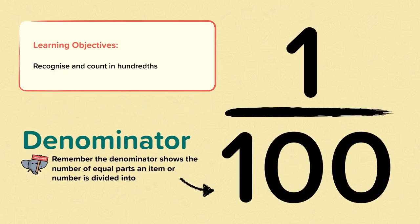Hundreds. In this nugget, the learning objective is to recognize and count in hundreds. A hundredth is a fraction, but for any hundredths, the denominator is always going to be a hundred. Remember, the denominator shows the number of equal parts an item or a number is divided into.